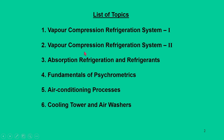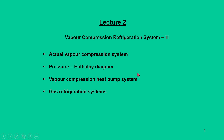Dear learners, welcome to this course, Applied Thermodynamics module 5, Refrigeration and Air Conditioning. As discussed in the last class, there are six lectures and the first two lectures will be on Vapor Compression Refrigeration Systems. We are in lecture number 2, that is Vapor Compression Refrigeration System part 2. In this lecture, our main intention would be to discuss about actual vapor compression systems.